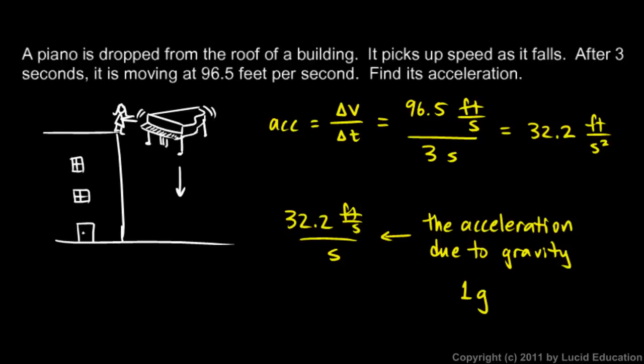Little g for gravity. 1g refers to this much acceleration: an increase in speed of 32 feet per second per second, or a change in velocity of 32 feet per second per second.